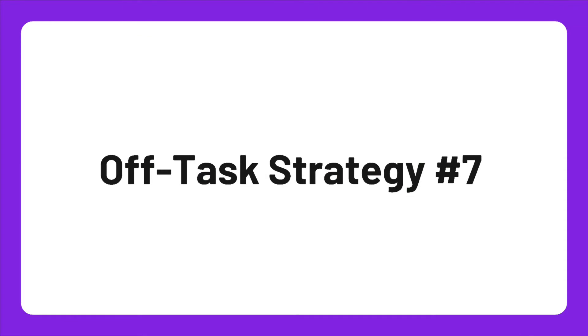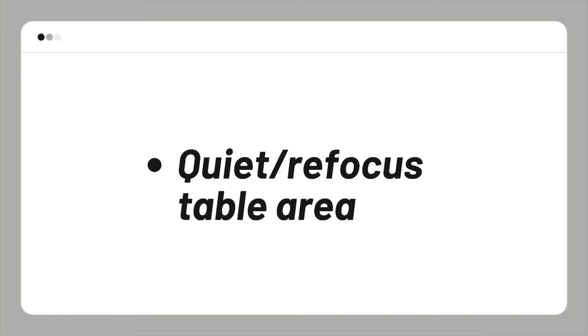Always keep a quiet space in the room — I call it the refocus table. My refocus table usually has coloring worksheets, maybe a word search, a place where students can listen to relaxing music or just get away from the class and sit on their own. You might have one, two, or even three refocus tables in your classroom. Coming from working on Zoom and Google Classroom, students need that quiet place away from others to have their own area to work.